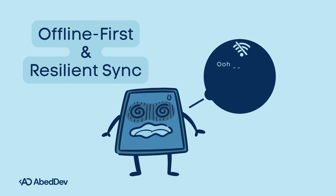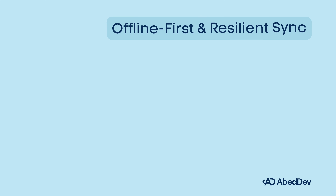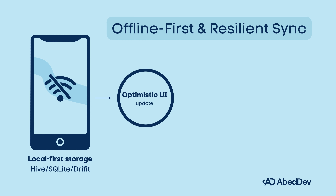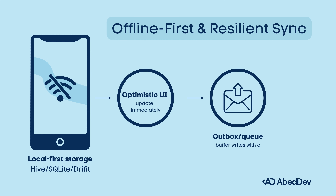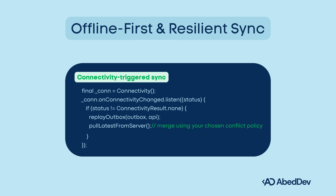Offline-first resilient sync. Mobile networks are flaky. Design your app to work without connectivity and sync safely when back online. Code practices: local-first storage — write and read from SQLite, sync in background. Optimistic UI — update UI immediately and mark records as pending. Outbox pattern — queue buffered writes with a UID and replay when online. Idempotent API — server accepts the same operation ID only once. Conflict strategy: pick one, like last-write-wins or field-level merge, server-authoritative and documented. Exponential backoff with capped retries on server errors. React to connectivity changes to trigger sync. Pro tip: log every sync decision, conflicts, and retries — it's a lifesaver when debugging user reports.